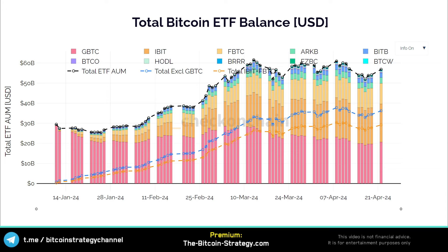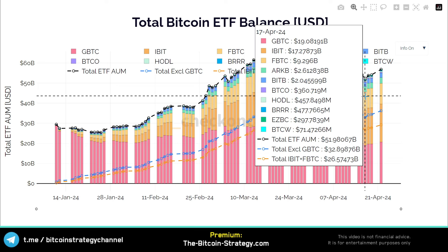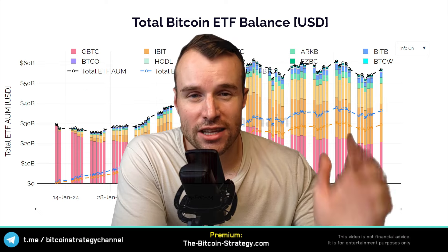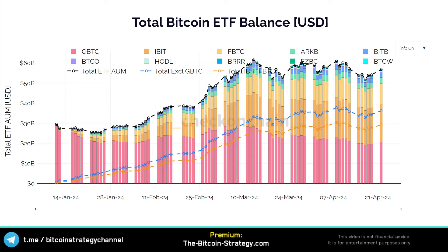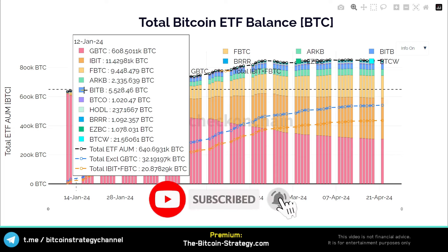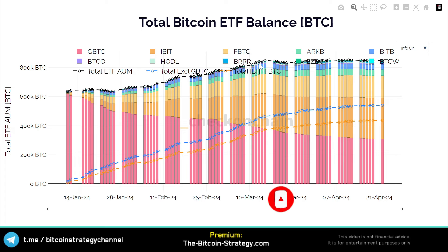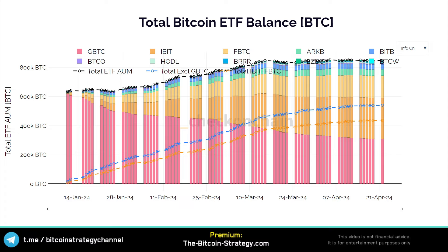Everybody is talking about the demand from traditional finance through the Bitcoin ETFs. What's happening to that demand and how much is it actually impacting the price? This is the total Bitcoin ETF balance measured in dollars — it went up quite a bit and now is fluctuating. We had been at 61 billion at some point, then went down to 52 billion, and now we are recovering. But instead of looking at the total ETF balance in US dollars, let's look at this measured in Bitcoin. There was an increase in the Bitcoin balance held by the ETFs, but that increase has halted since the middle of March. For more than a month, we don't see any absorption by the Bitcoin ETFs potentially supporting the price.